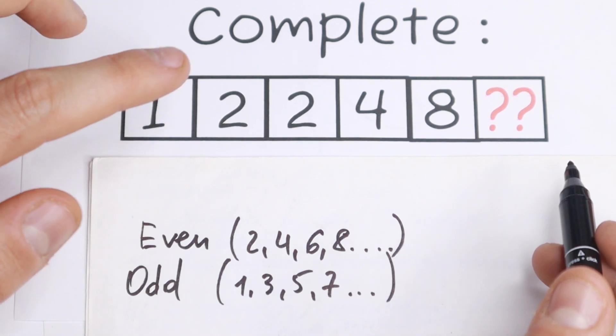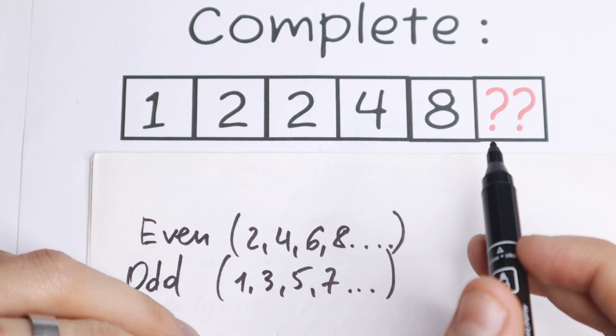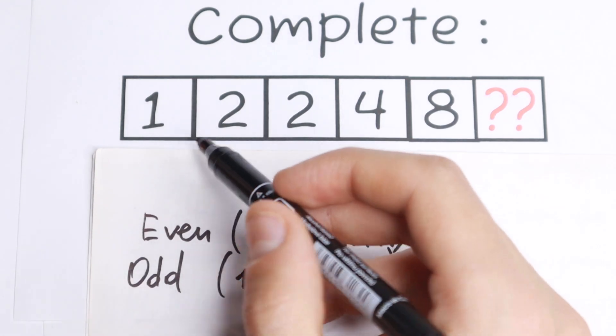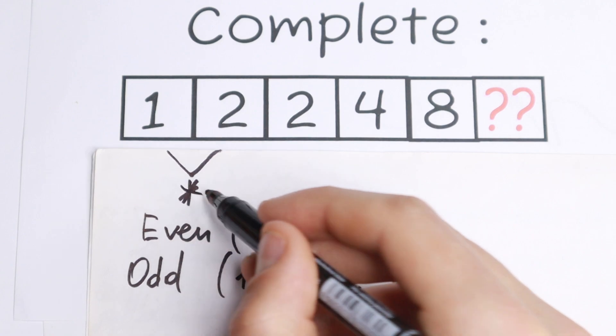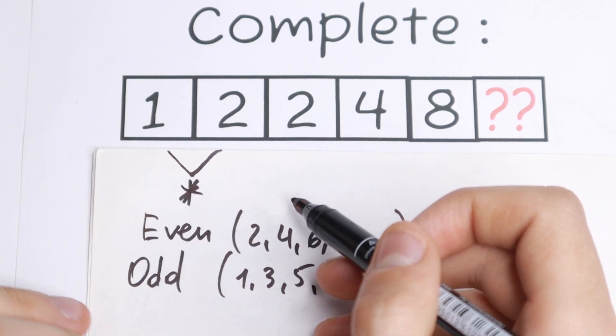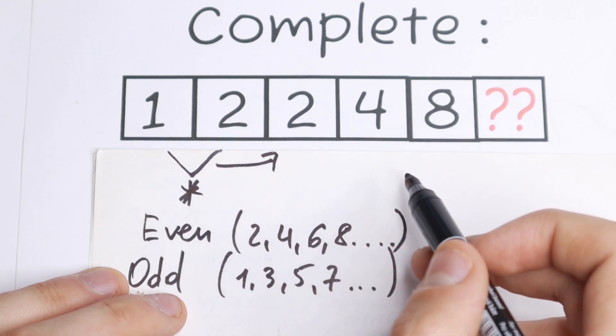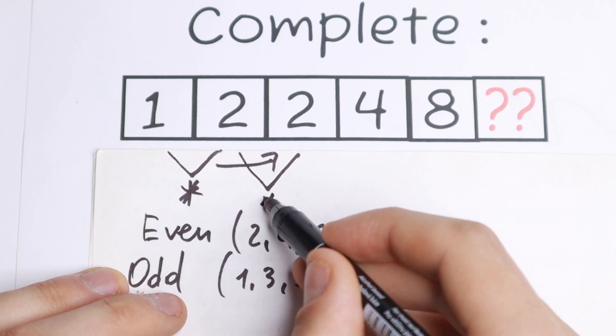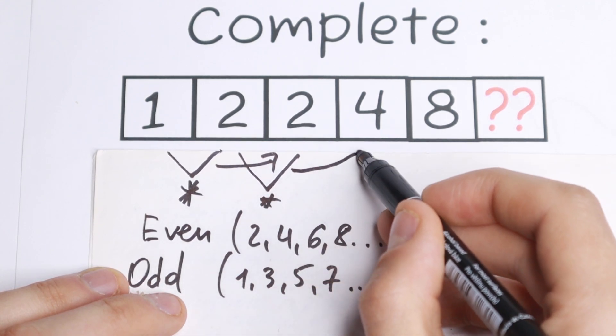So let's try to find the pattern using addition, subtraction, multiplication, and division. Take a look at what I see. Really interesting case. If we multiply the first two numbers, we will have 1 times 2 equals 2, the third number. If we multiply the next two numbers, 2 times 2, we will have 4, the next one.